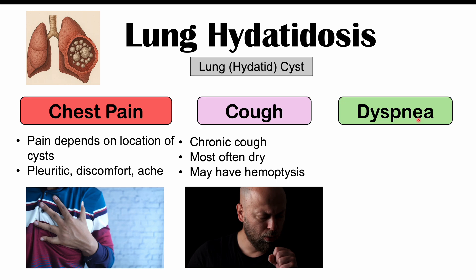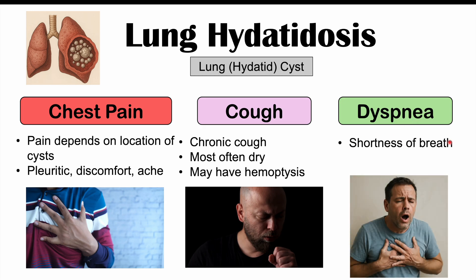We can also see dyspnea — shortness of breath — in patients with echinococcus lung involvement. This is often due to structural changes, as some echinococcus species can lead to structural damage to the lung, causing permanent damage that leads to chronic dyspnea. It depends on which species is causing infection and the location of the cyst in the lung.